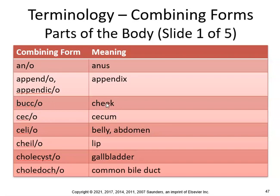Buc, bucco means cheek. Sec, secco, cecum. Cilio is the belly or the abdomen. Now look at the spelling on this: cilio and chile, or chileo, is lip.